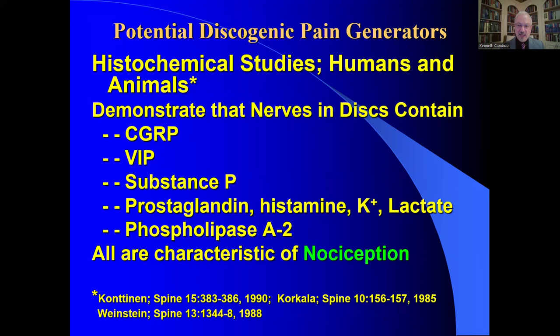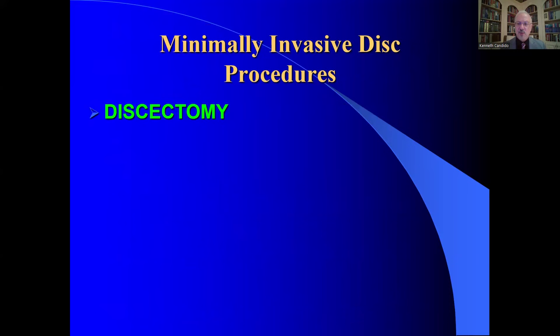Not only are there innervation areas of the disc, but those nerves contain seven mediators of pain and inflammation: histamine, lactic acid, bradykinin, substance P, calcitonin gene-related peptide, vasoactive intestinal peptide, and phospholipase A2. Historically, we have focused on phospholipase A2 as part of the arachidonic acid metabolic pathway, because corticosteroids can neutralize phospholipase A2 — it is an antidote to that chemical, which can egress from damaged discs. That is one of the foundations for performing epidural steroid injections. All of these chemicals are characteristic of nociception.